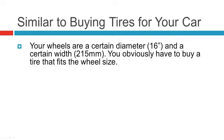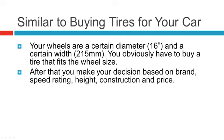Similar to buying tires, you've got to get the size right. But after that, you're going to make your decision based on brand, speed rating, height, construction, and price. When you're buying tires, you can choose from many different brands. Depending on if you do mostly city or highway driving, or you're a speed racer, you might get higher speed ratings — especially if you have a performance car like a Corvette.